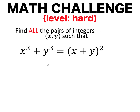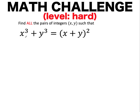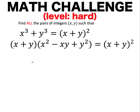Now let's solve this problem together. Notice that on the left side we have the sum of two cubes, which we can factor as the quantity x plus y times the quantity x squared minus xy plus y squared. And we just copy the right side. Now let's look at different cases.